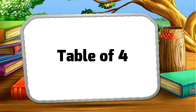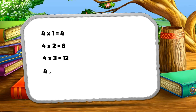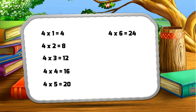Table of four. Four one za four, four two za eight, four three za twelve, four four za sixteen, four five za twenty, four six za twenty-four.